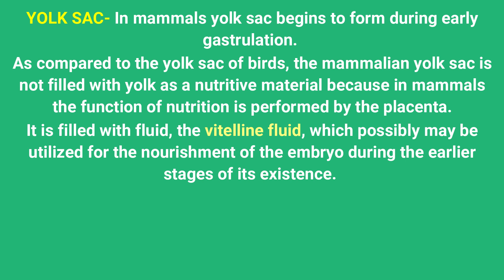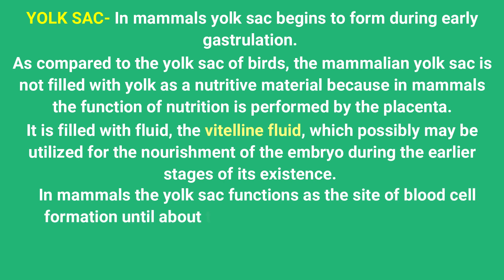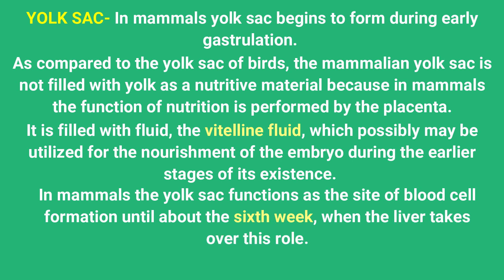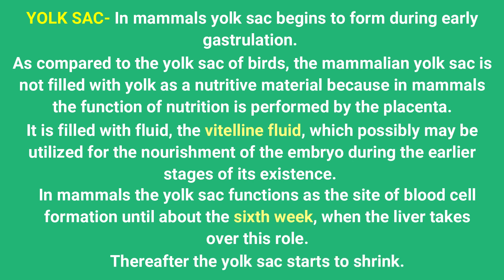In mammals, the yolk sac is filled with vitelline fluid, which provides nourishment to the embryo during early stages until the placenta begins to function properly. The actual function of the yolk sac in mammals is blood cell formation — RBCs, WBCs, etc. are initially formed in the yolk sac up to the 6th week. After that the liver takes over this role, and later bone marrow produces RBCs. After the liver takes over, the yolk sac starts to shrink.